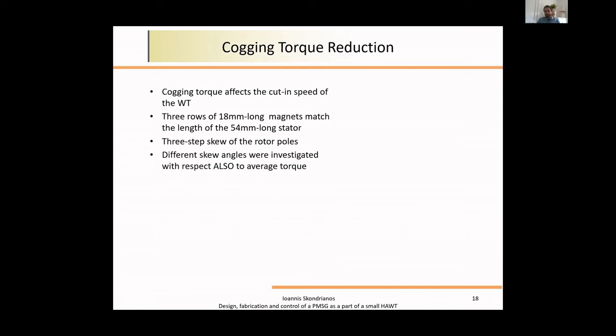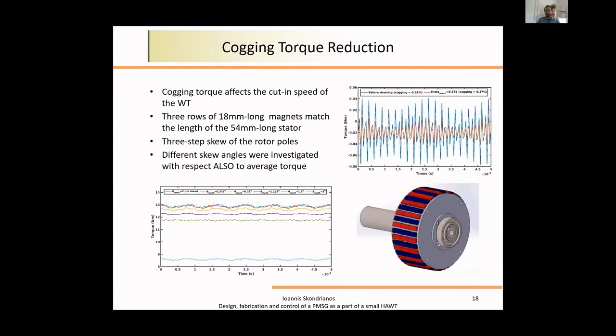Last thing in terms of this model is cogging torque reduction. I already told you how important it was for us. To fight that, we decided to test different skew angles. You can see the rotor consists of three rows of 18 millimeter long magnets, matching the total length of the stator, a rotor of 44 millimeters. We decided to do a three-step skew of these poles, starting with zero angle up to three mechanical degrees. As the skew angle increased, we could see torque was dropping. However, the best results were given by a skew angle of 0.375 mechanical degrees. It reduced cogging torque from 0.91% to 0.37%, a huge improvement for us.